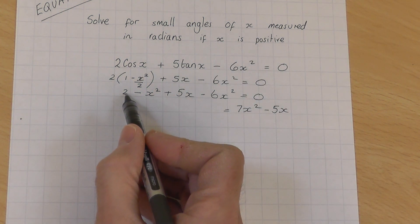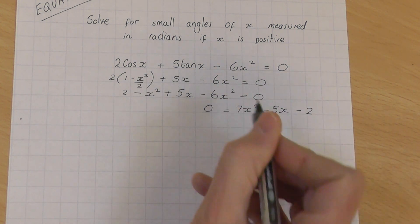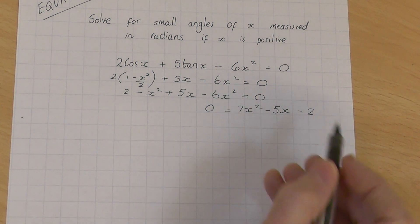And then you've got a plus 2, take that to the other side, you get minus 2 on the right-hand side, and that means we've got nothing now on the left-hand side. So we've got to solve this quadratic.